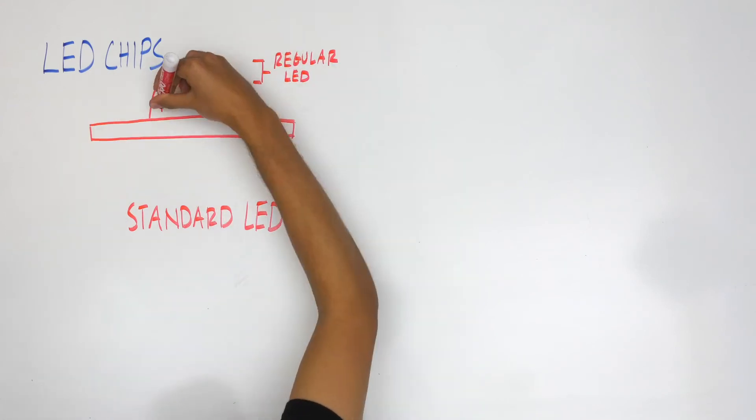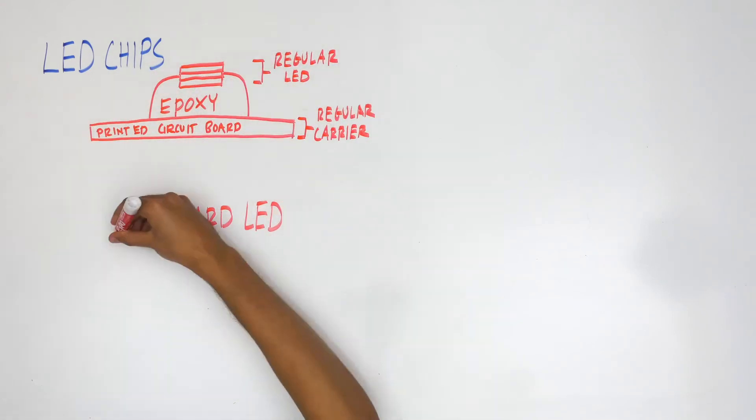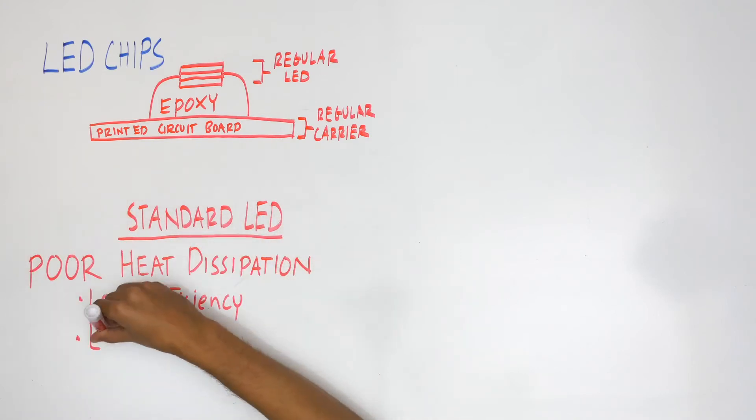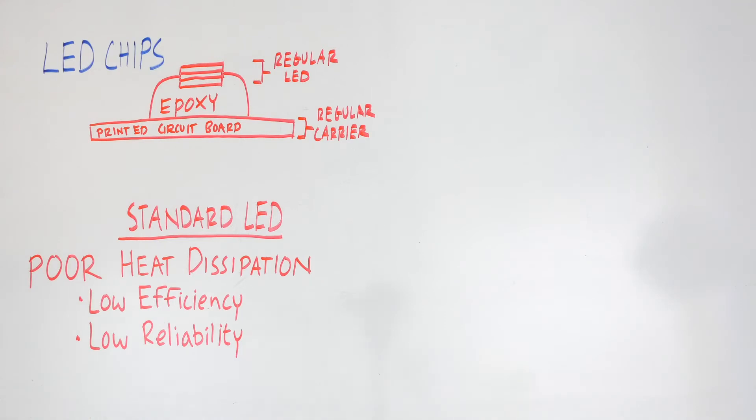Many consumer-grade LED chips are bound by epoxy to a standard printed circuit board. This design has its limitations. Namely, epoxy does not dissipate heat well. These thermal restrictions inhibit standard LED light output and performance.